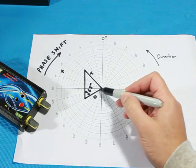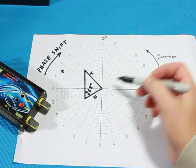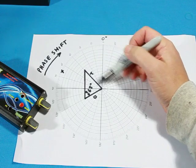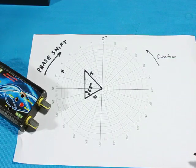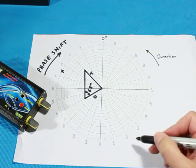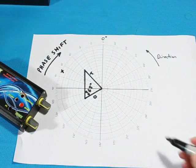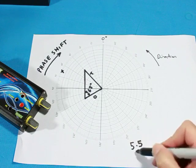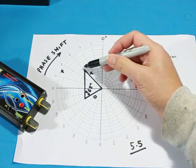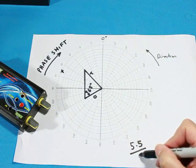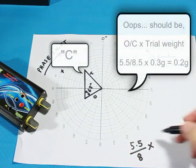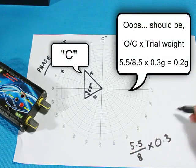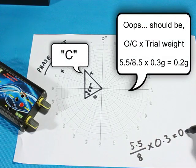The original trigger level divided by the trial run level multiplied by the original trial weight. So for example, the original vibration or trigger level was 5.5 divided by the trial weight trigger level, which was 8 multiplied by the trial weight, which was 0.3. Once we calculate that, it ends up being 0.2 grams.